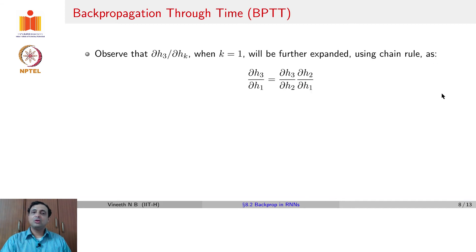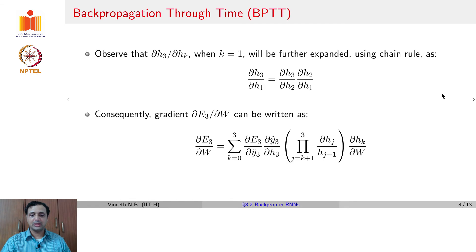So if you now observe ∂H_3/∂H_k when k is equal to 1, as we just said can be expanded as ∂H_3/∂H_1 would be ∂H_3/∂H_2 into ∂H_2/∂H_1. So this entire gradient can now be succinctly written as summation k going from 0 to 3, ∂E_3/∂Y_3hat into ∂Y_3hat/∂H_3. And all these terms in between can be subsumed into a product which is given by ∂H_j/∂H_{j-1}. And you still would have the summation that goes from k going from 0 to 3.